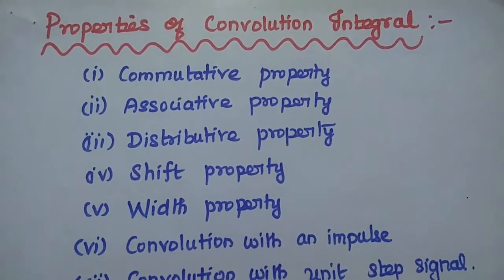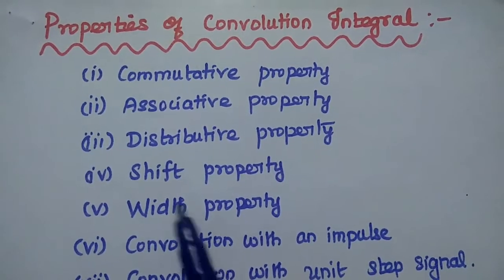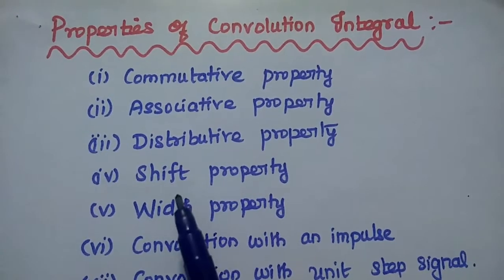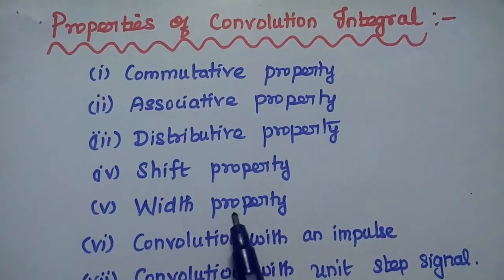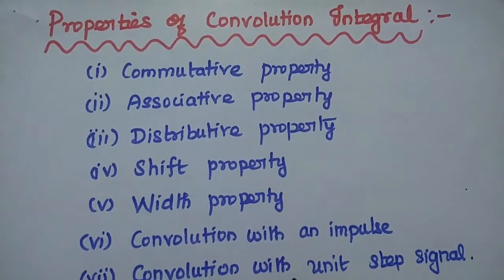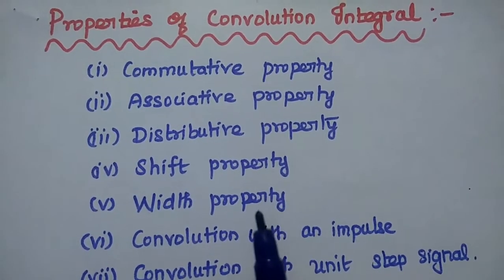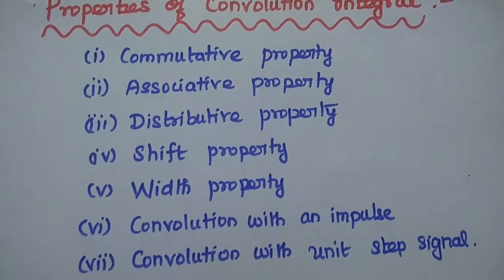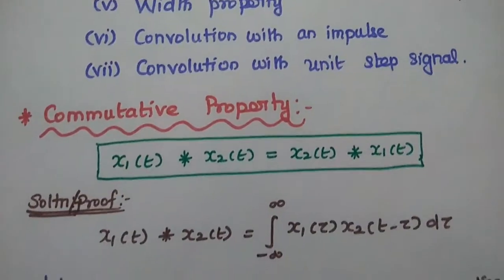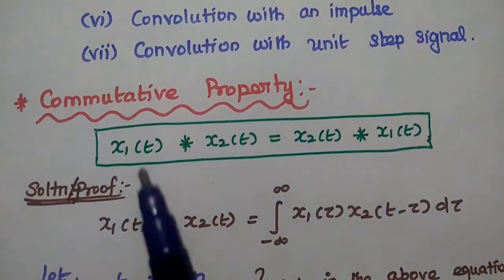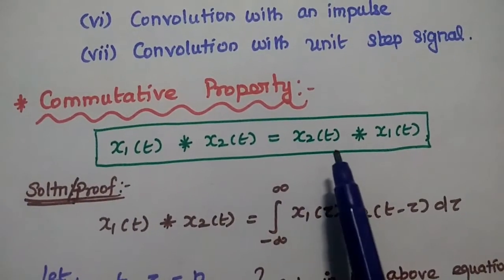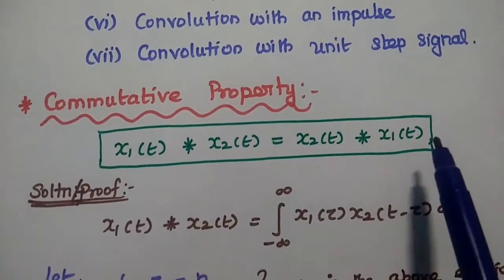Convolution integral has some important properties: commutative property, associative property, distributive property, shift property, width property, convolution with an impulse signal, and convolution with unit step signal. These are all the important properties of convolution integral. Let's see them one by one. The commutative property is given as X1 of t convolved with X2 of t is equal to X2 of t convolved with X1 of t.